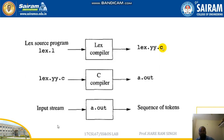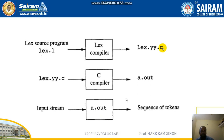We can understand this with a diagram. Suppose we have written a program in a file called lex.l. Any lex program you write, the file name will be extended with dot-l. This lex.l program is fed to the lex compiler — the lex tool — which generates a C file called lex.yy.c. This C file is then compiled with a C compiler, which generates the lexical analyzer called a.out. Whatever input stream is given to this a.out lexical analyzer, it will segregate it into tokens and generate a sequence of tokens.